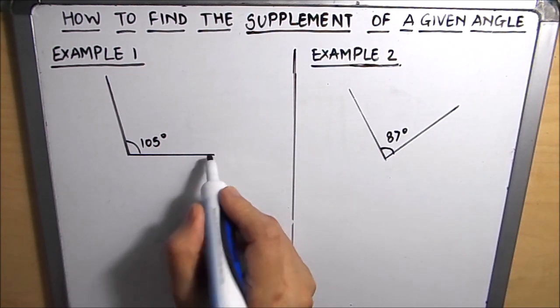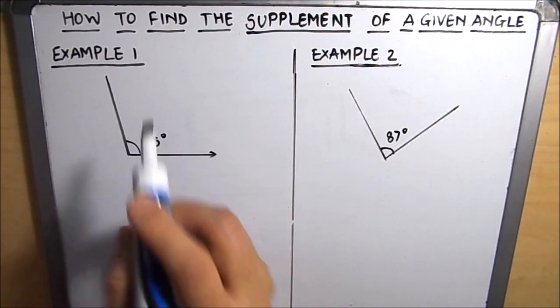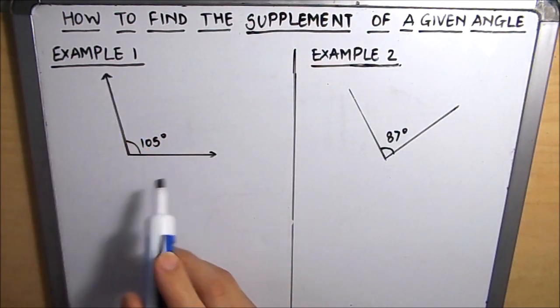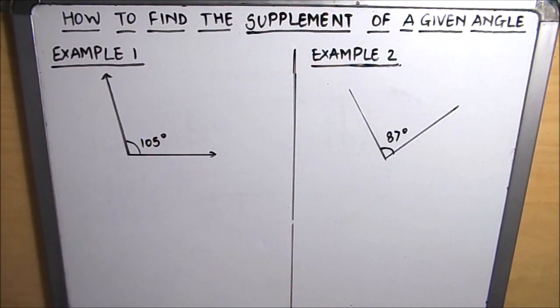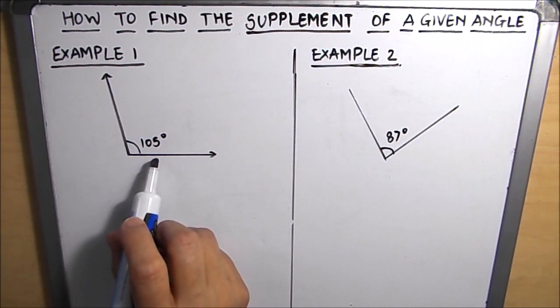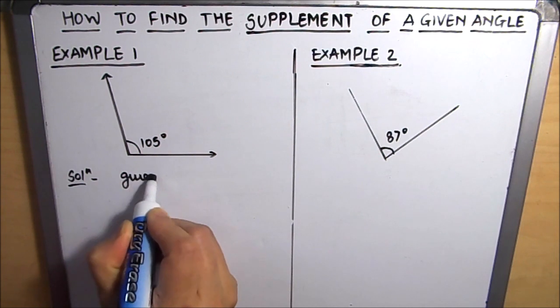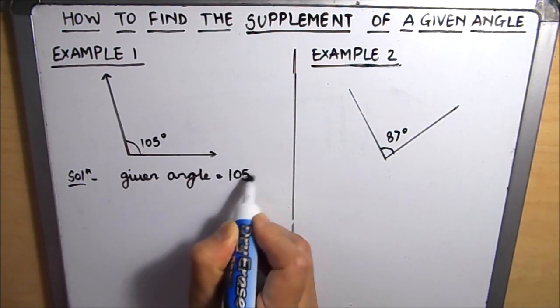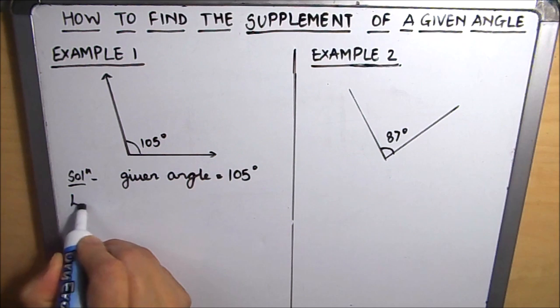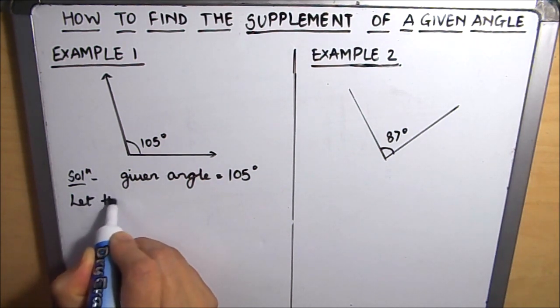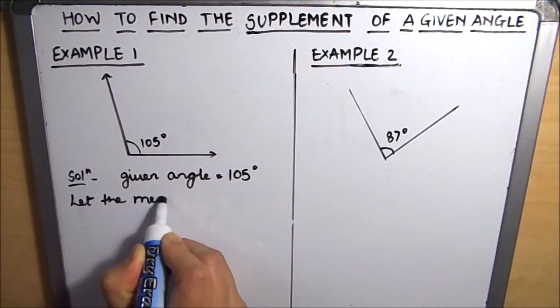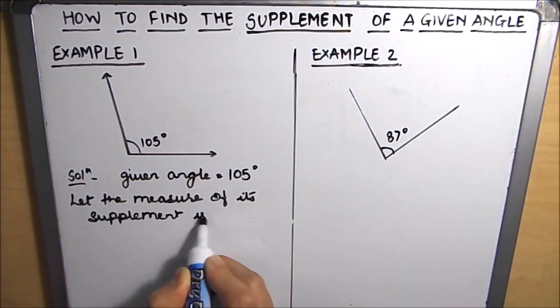Here in this first example we have been given an angle of 105 degrees and we need to find the supplementary angle or the supplement to this 105 degree angle. So our given angle here is 105 degrees. Let the measure of its supplement be x degrees.